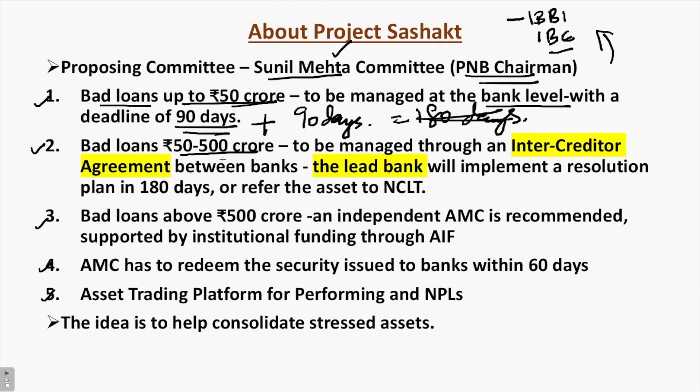The second prong covers bad loans between 50 to 500 crores. They are to be managed by an inter-creditor arrangement or agreement between banks. For 50 to 500 crores, there will be multiple banks — whether public sector or private sector — involved in those loans, since one bank is not going to provide that much loan to one organization. An inter-creditor agreement will be created, a lead bank will be decided, and that lead bank will implement a resolution plan within 180 days. This 180 days is in addition to the 180 days provided in the Insolvency and Bankruptcy Code — so again, another delay.